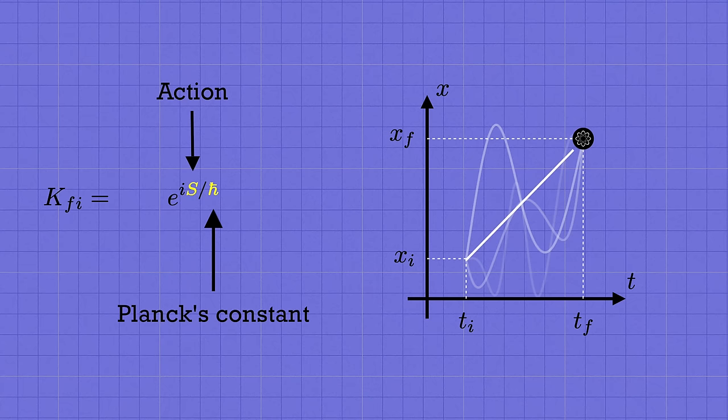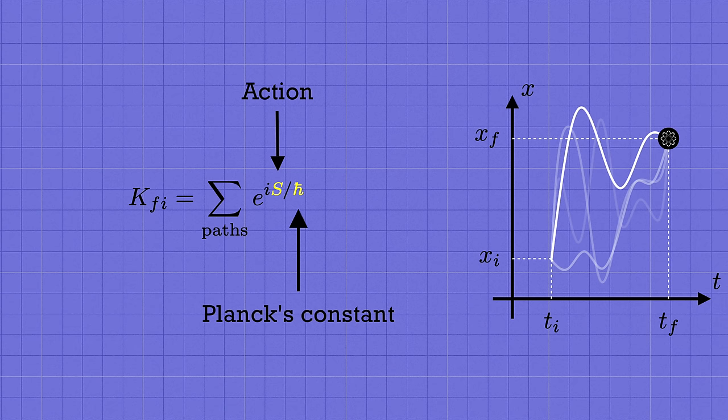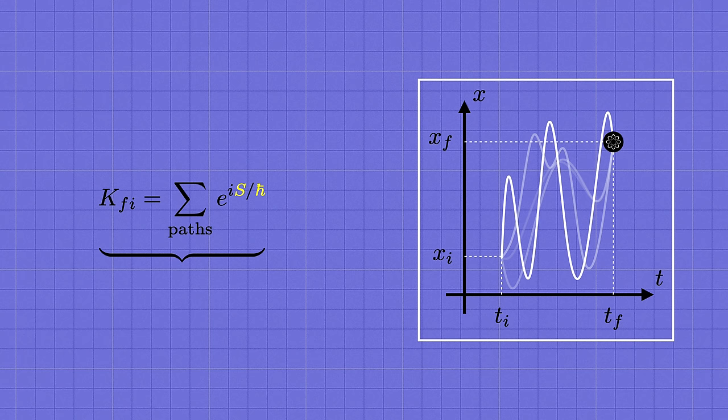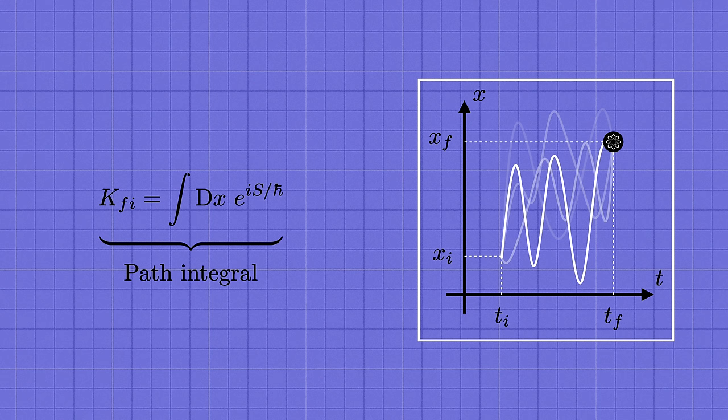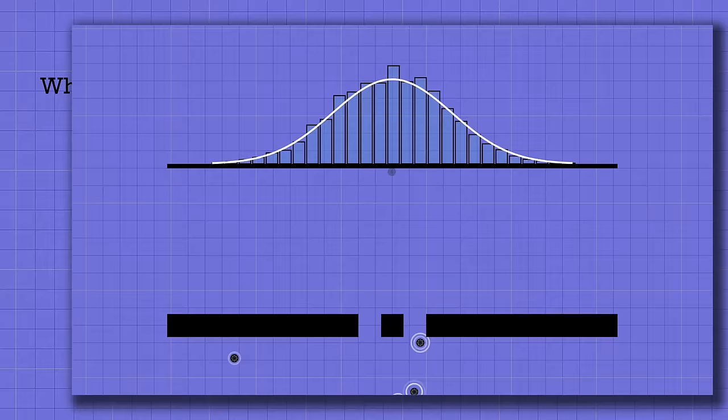And now to find the total amplitude for the particle to go from point i to point f, we add up these contributions from all the possible paths. This is Feynman's procedure for computing the quantum mechanical amplitude. Of course, the set of all these paths isn't a finite list, so this isn't really a discrete sum. It's a sort of integral called a path integral. And so we more often write it using a notation like this. And that's why this is called the path integral formulation of quantum mechanics. But anyway, now we need to actually understand what the heck all this means.